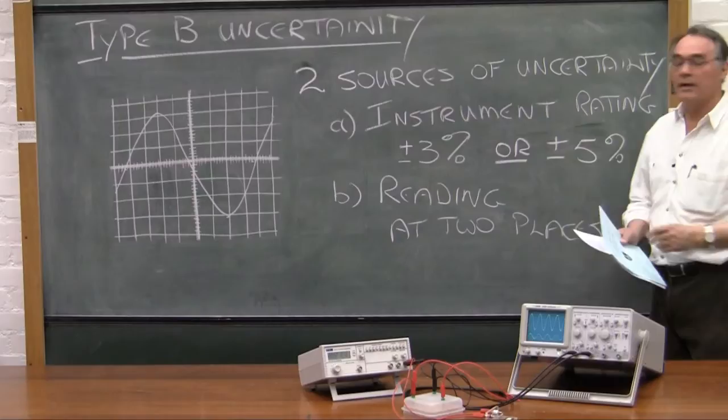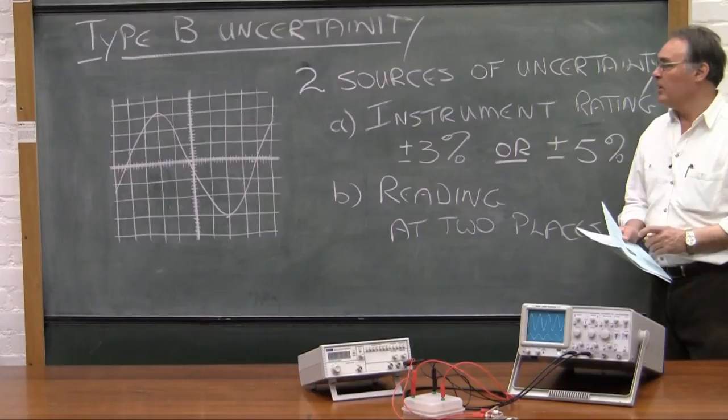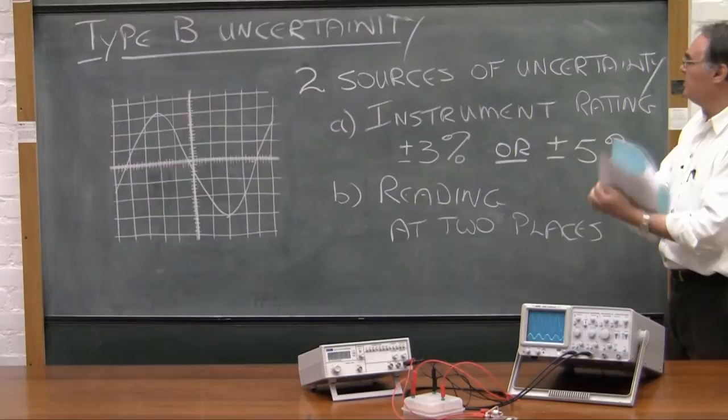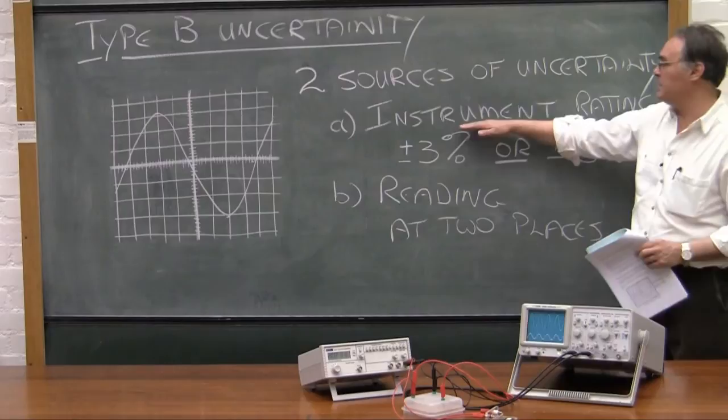Now, when you do the section of work where you've got to work out the Type B uncertainty in the measurement using the oscilloscope, you need to look in the guide at the complete worked example. There you will see that you need to consider two sources of uncertainty.